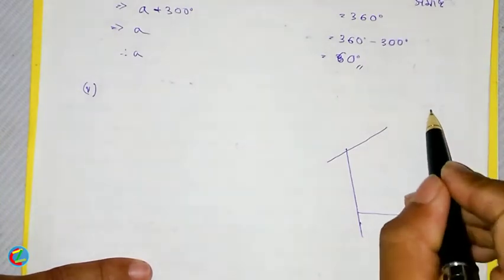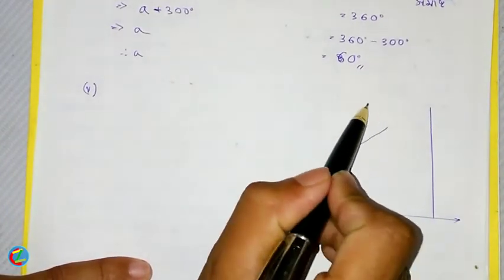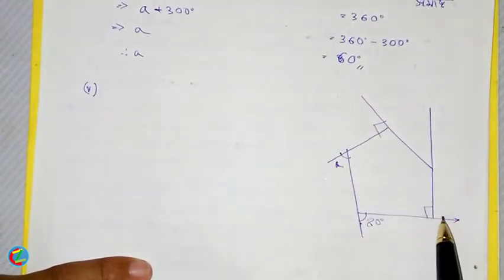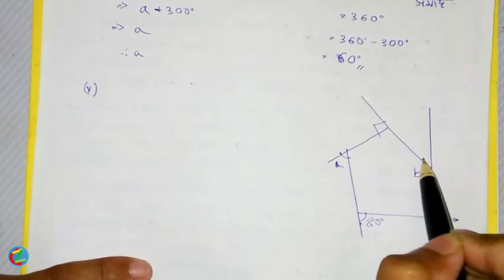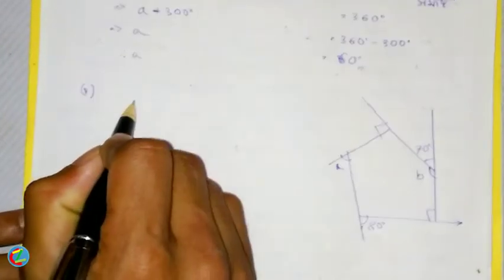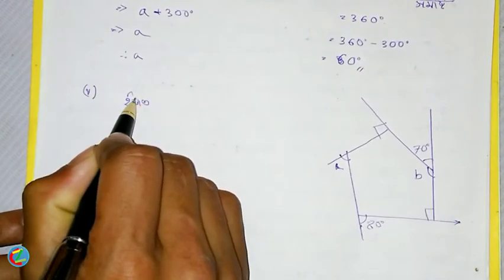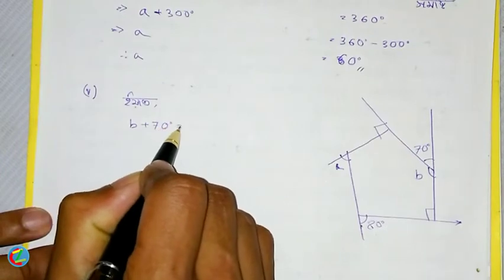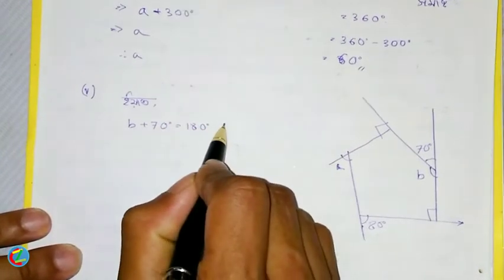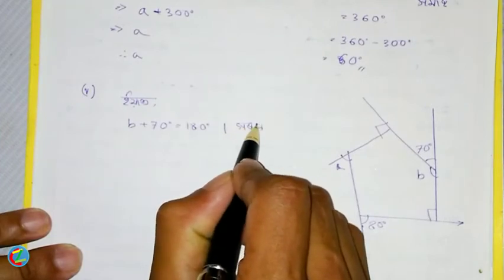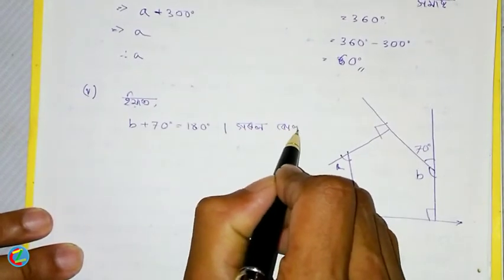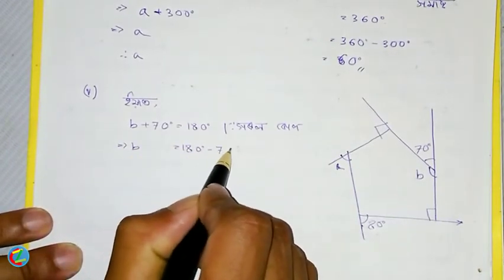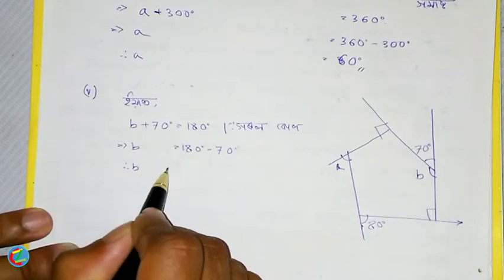You can read this where we have a number of angles. It means 1 to 90 degrees. B plus 70 degrees is equal to 180. So B is equal to 180 degrees minus 70 degrees.